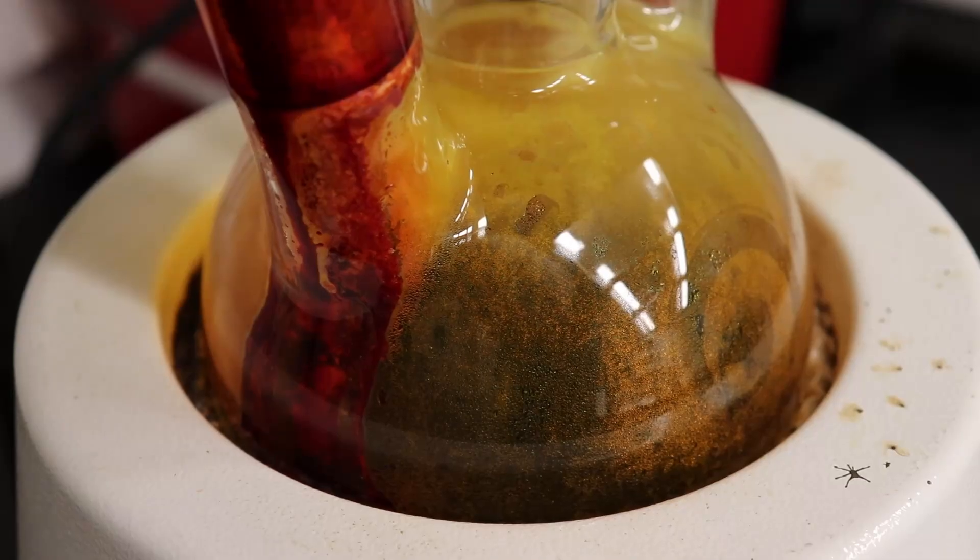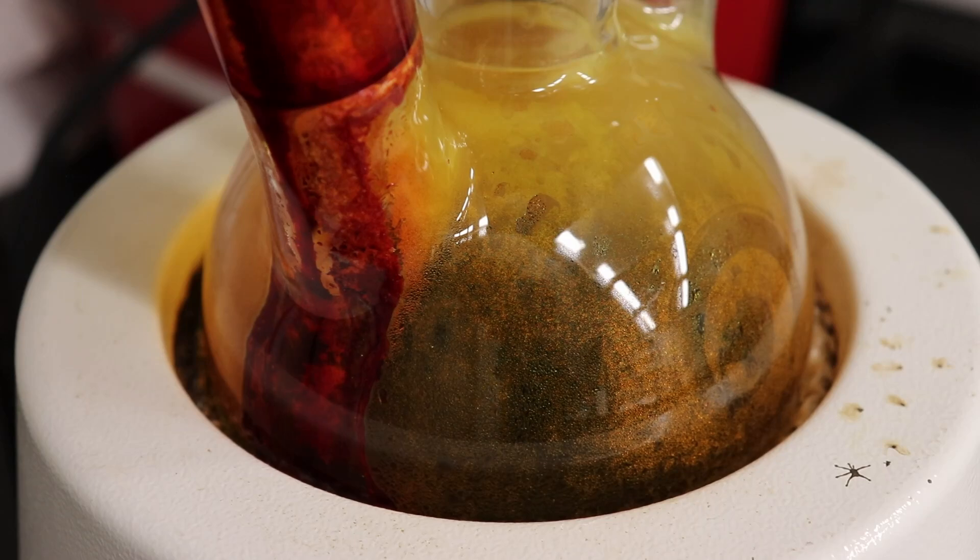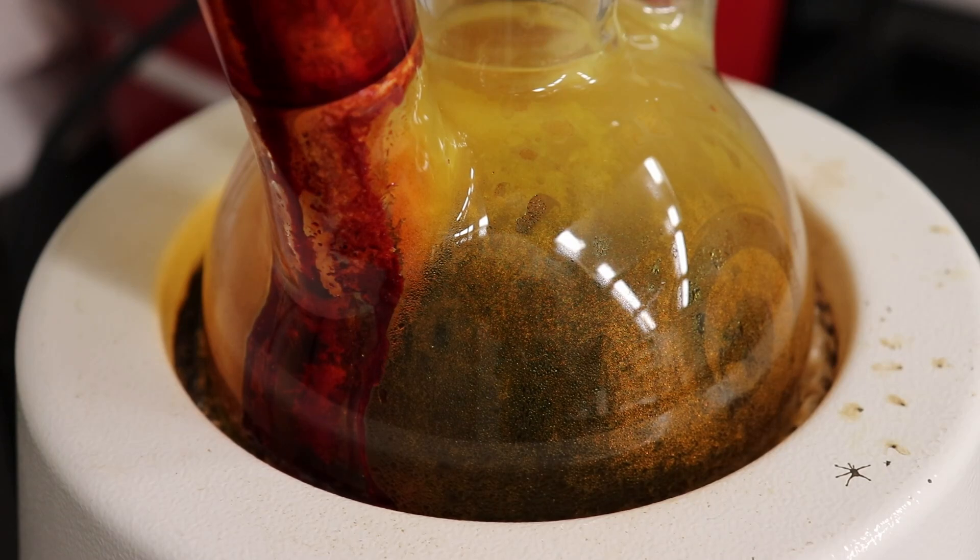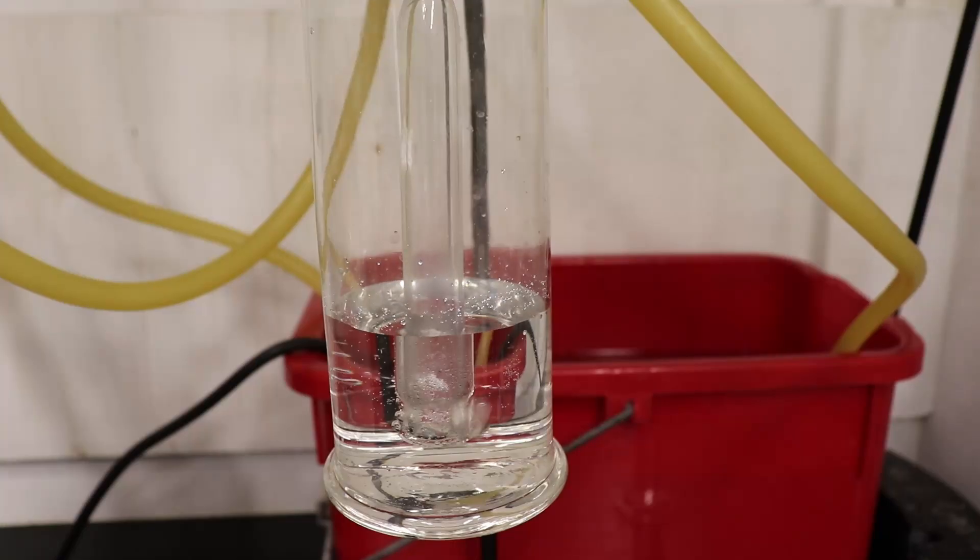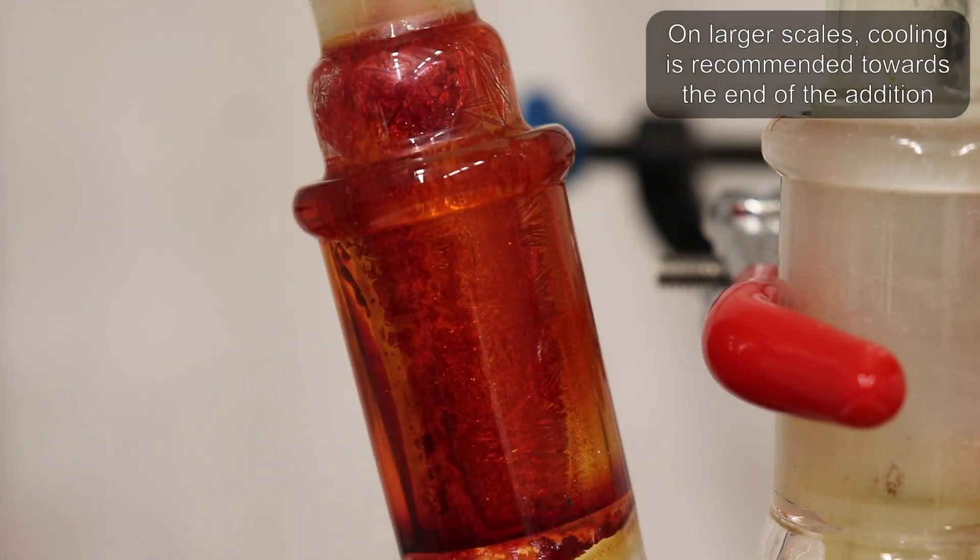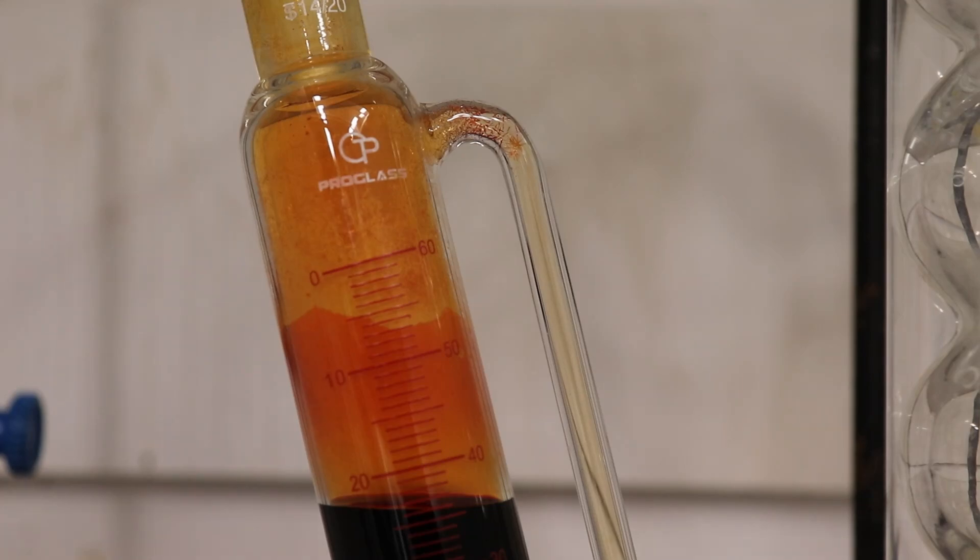The exotherm was most noticeable where the bromine was running down the wall of the flask. However, the exotherm was not significant enough to evolve excessive amounts of hydrogen bromide, as indicated by the bubbler trap, so I didn't need cooling during addition. There was also formation of red crystalline deposits around the bromine solution.